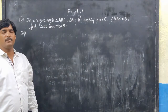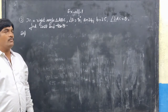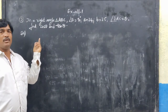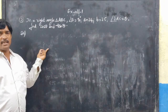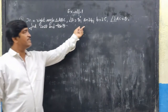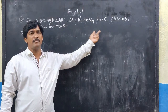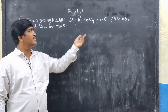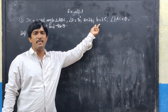We now solve the third problem of exercise 11.1. The difference between the second and third problem is that in the third problem, small a and small b are given instead of direct lengths — these are notations for the lengths of the sides.